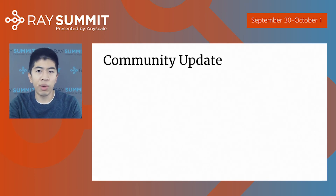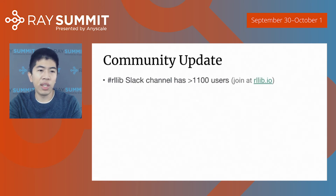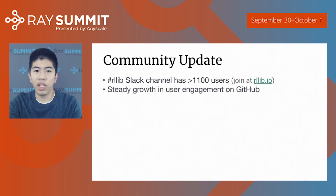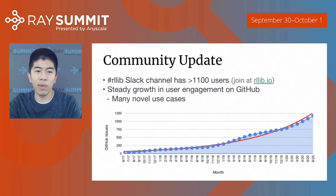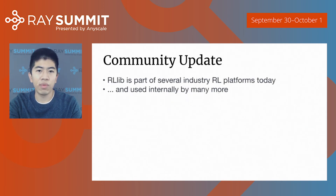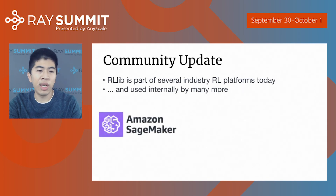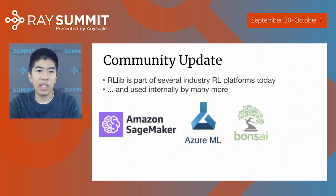I also want to give an update on the RLib community. For Ray, we have a Slack with an RLib channel that has more than a thousand users — you can join at RLib.io. We've seen steady growth in user engagement on GitHub, and users have reported many novel use cases that help guide our roadmap. There's been an accelerated number of issues reported per month, especially in the past few months, which is a measure of user engagement. RLib is also part of several industry RL platforms today, including Amazon SageMaker RL, Azure RL, Bonsai, and SkyMind.